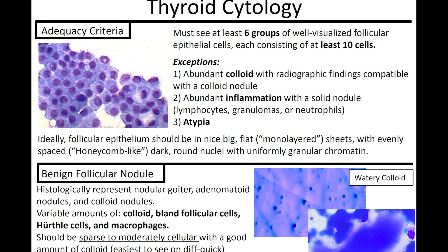So: six groups of 10, or abundant colloid, inflammation, or atypia. Ideally, the follicular epithelium should be in a nice big flat monolayered sheet with evenly spaced honeycomb-like dark round nuclei with uniformly granular chromatin.